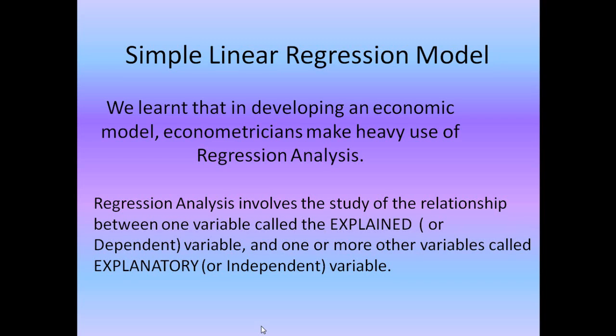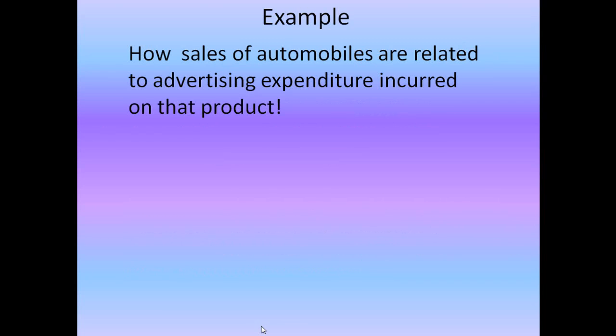To explain this definition I will take the help of a few examples. First, let us suppose that we need to predict how the sales of automobiles are related to advertising expenditure incurred on that product. Here the independent variable would be advertising expenditure, and on the basis of that the sales of automobiles would be determined. So automobile sales would be the dependent variable.